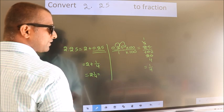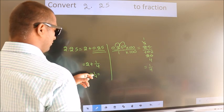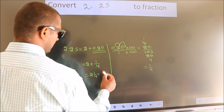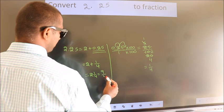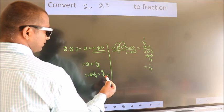In improper fraction it is 2 into 4 is 8, plus 1 is 9, so 9 by 4 is our fraction.